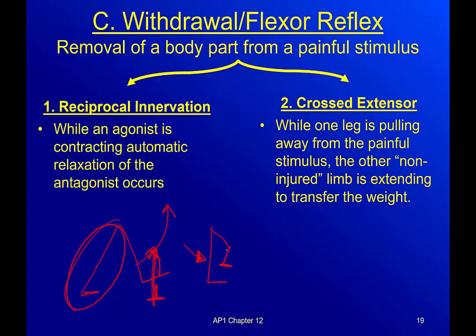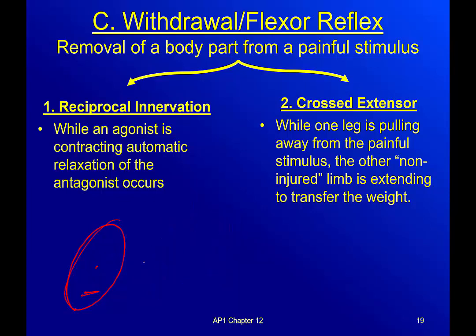The pain is getting to my brain, telling this leg to contract. But at the same time, it's going across my body to the opposite leg, telling it to catch me. We've got reciprocal innervation — while the agonist is contracting, automatic relaxation of the antagonist is happening. If I need to bend my leg away from the painful stimulus, the muscle that normally straightens my leg needs to shut off. Because again, I don't want two fighting muscles.